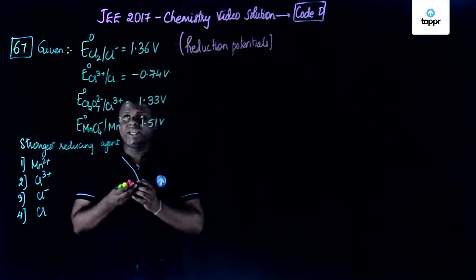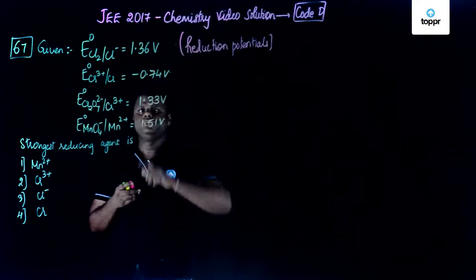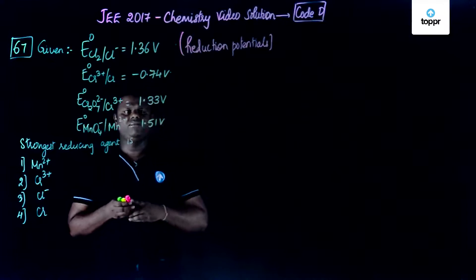Now if you could see, the values are given: 1.36 volt, negative 0.74 volt, 1.33 volt, and 1.51 volt.